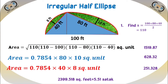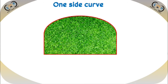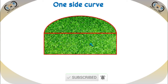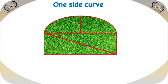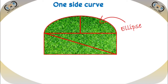Let's see one side curve type length. If we want to measure this type of length, first divide it into two parts: one rectangle and one half ellipse. For the half ellipse, find the highest perpendicular length. For the rectangle, join the two opposite vertices to separate it into two triangles. Applying the triangle formula, we can easily find the area of those two triangles. Using the half ellipse formula, find the value of the half ellipse. After adding the half ellipse area plus the two triangles, we get the area of this type of length.